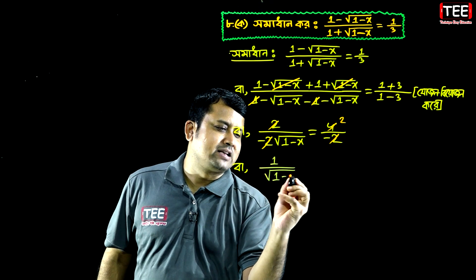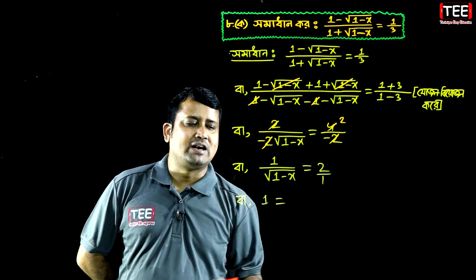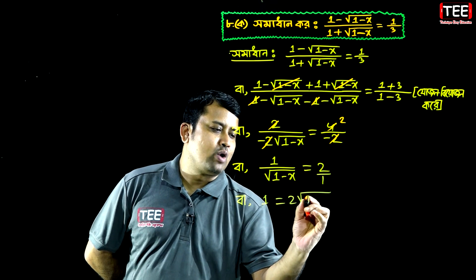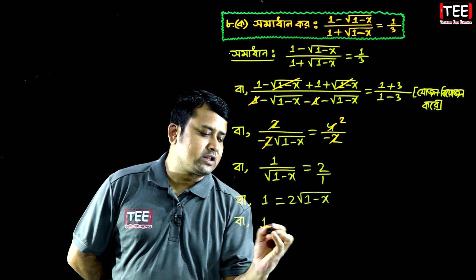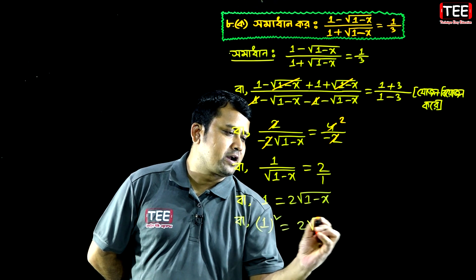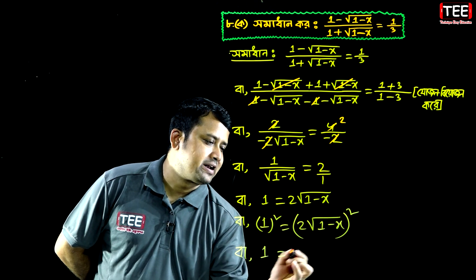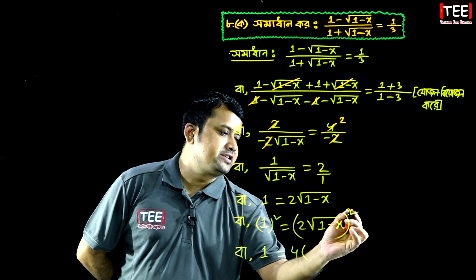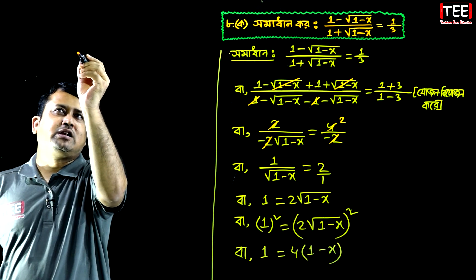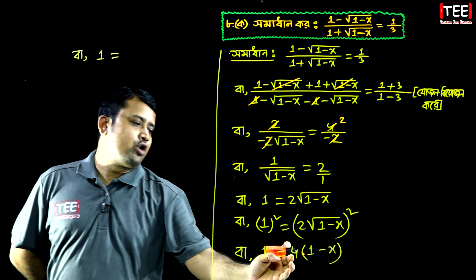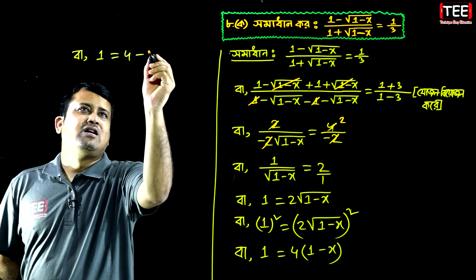x root over 1 minus x equal to pi over 2. R n is equal to 1, equal to 2 root over 1 minus x. 1 squared equal to 2 root over 1 minus x. 2x plus equal to 4 root over 2 minus x. 1 minus x equal to 4 minus x, equal to 4 minus x minus x.